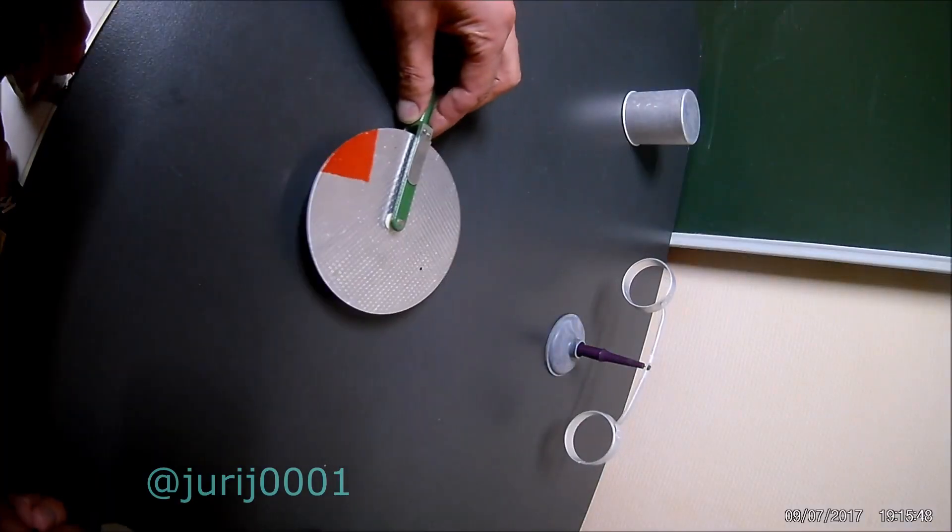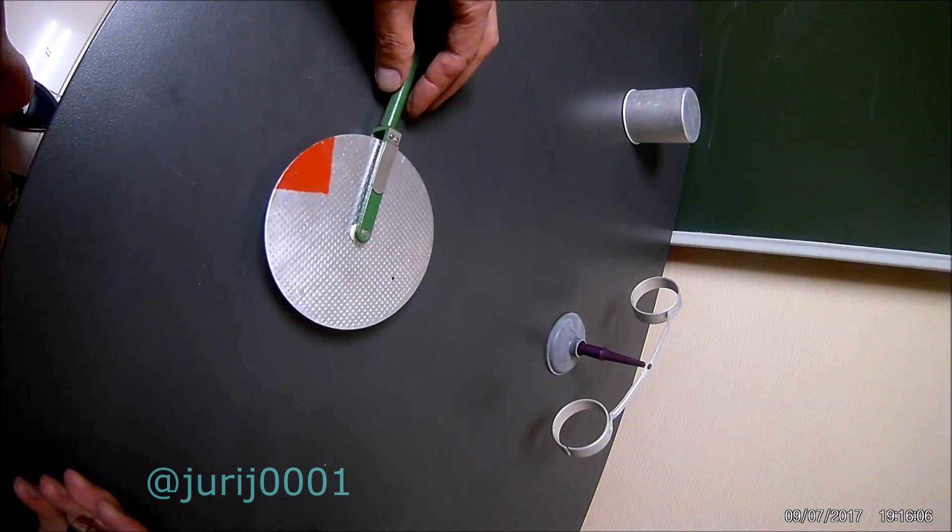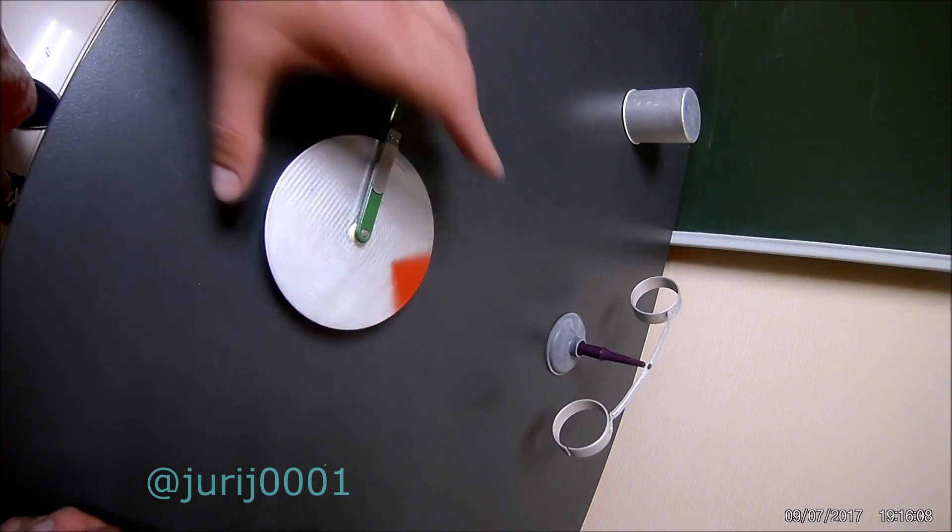Aluminum is not attracted to the magnet, but when the magnet moves, the aluminum disc begins to rotate in the direction where the magnet is moving.